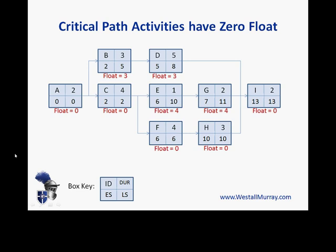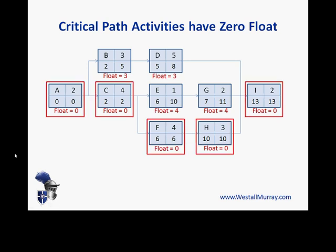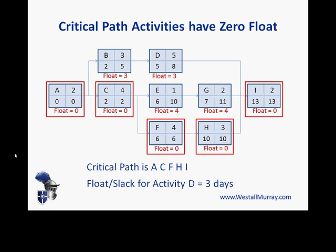The critical path consists of all zero-float activities: A, C, F, H, and I. As for the duration — be careful — it's not 13 days, it's 15 days, because you have to add in the duration of activity I. The best way is to add up the durations; don't be fooled by the 13 in the early start. The float and slack for activity D is 3 days.